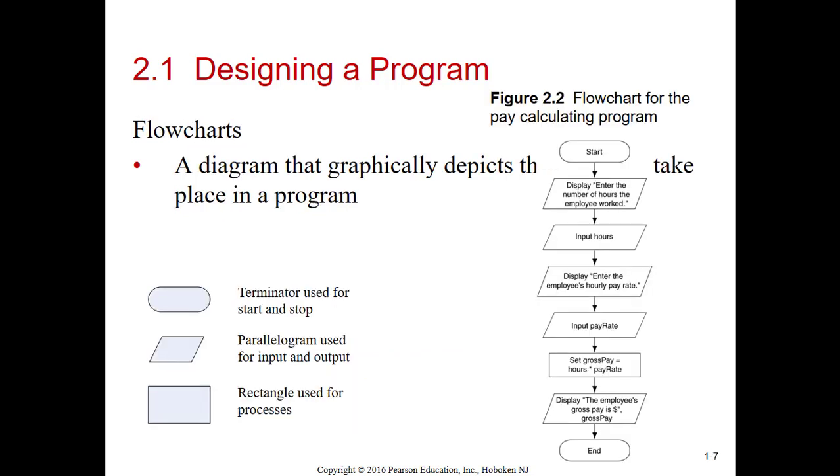A flowchart is a graphical representation of your code or your logic. Notice the terminator - that's the start and end, or start and stop. Parallelograms are used for input and output. The rectangle is used for processes, which is an assignment statement. You can look at the flowchart in Figure 2.2 and see that the user is going to see enter the number of hours the employee worked. Then they're going to enter the hours. Once they hit the enter key, they're going to see enter the employee's hourly pay rate. Then they'll enter the pay rate and hit enter. The program is going to calculate gross pay and then output it back out to the user.